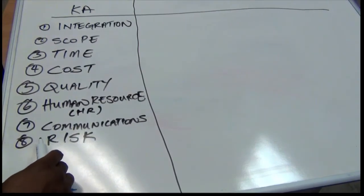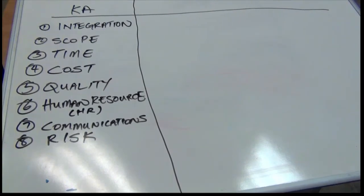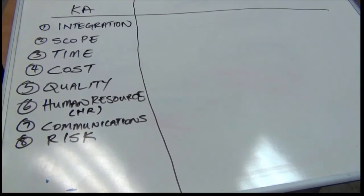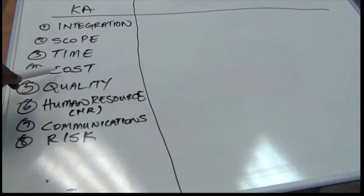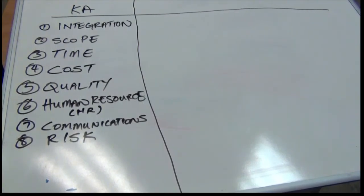I've spent a bit of time talking about risk management because it's a very important area of project management that brings everything together. You could have a risk in how you identified scope, in how you developed your schedule, or in how you budgeted the cost, or in how you identified the standards — maybe a huge standard you failed to observe, or a regulation. So all of these knowledge areas have possible risks surrounding them, and those risks need to be identified.